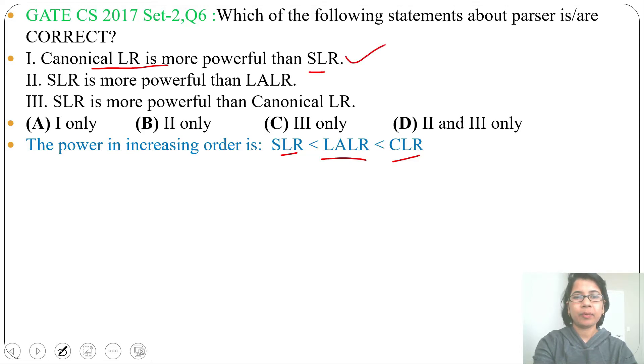Statement 2: SLR is more powerful than LALR. This is wrong. SLR is less powerful than LALR. Statement 3: SLR is more powerful than Canonical LR. This is also wrong. Canonical LR is more powerful than SLR.